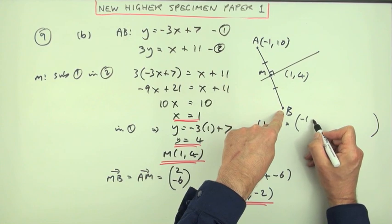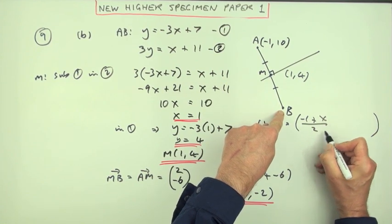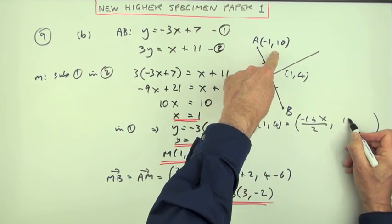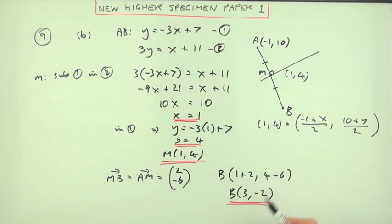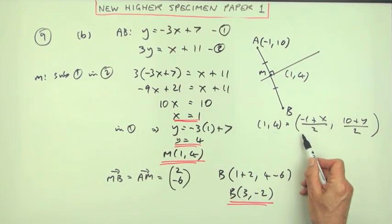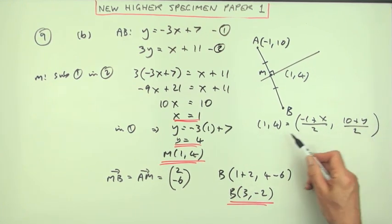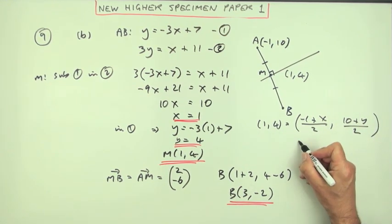What you do is you add the x coordinates—that's -1, I don't know what this is, so call it x—and half it. You add the y coordinates—that's 10, I don't know what this is—and half it. That gives you two equations because this should come to 1 and that should come to 4.